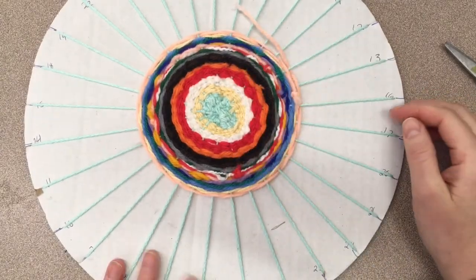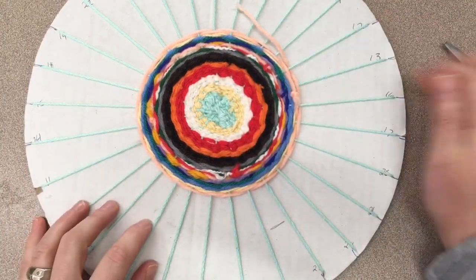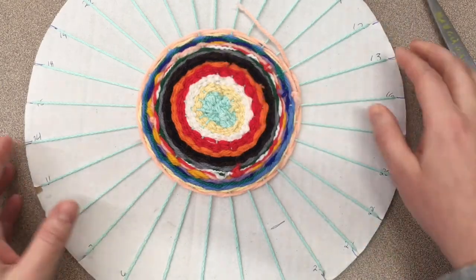Once you are done with your circle weaving, you are ready to take the weaving part off of the loom. The loom is this cardboard circle. You'll need a pair of scissors to do this.